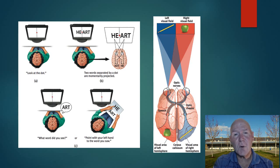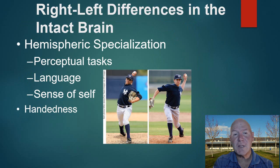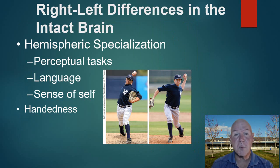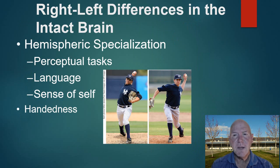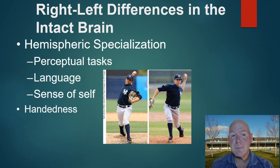This split-brain phenomenon does fade over time. When the brain is intact, almost everything we do involves both hemispheres working in coordination. fMRI and PET scans show we use both left and right hemispheres in nearly everything, though perceptual tasks are predominantly on the right and language predominantly on the left.